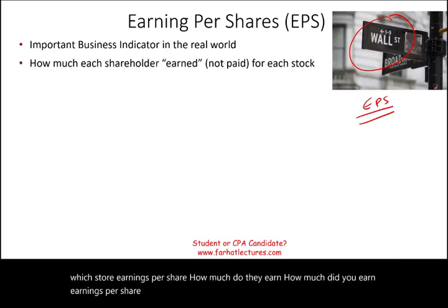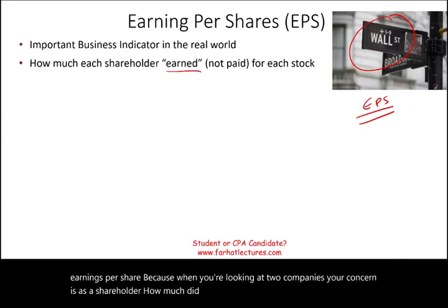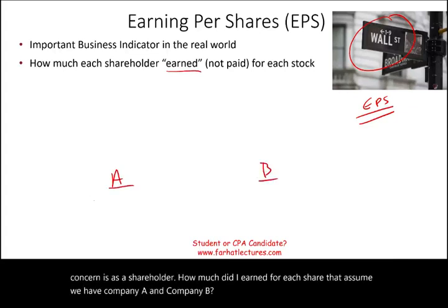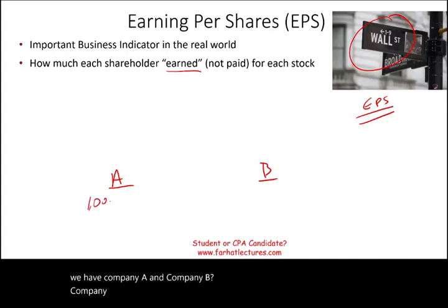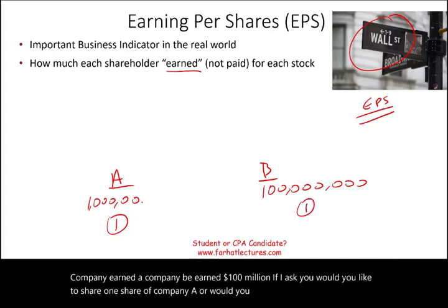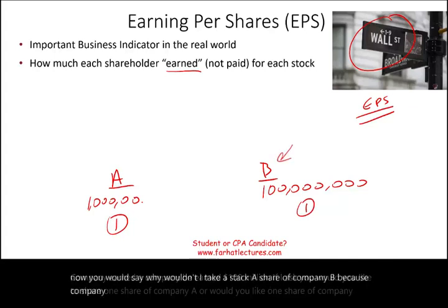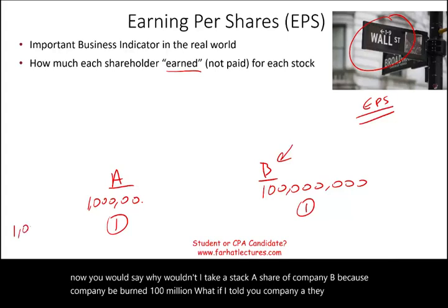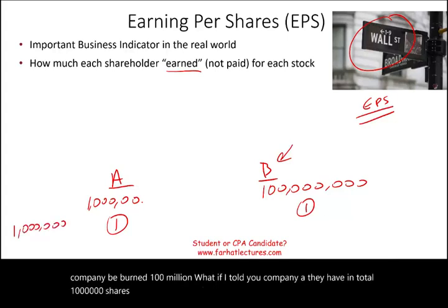Because when you're looking at two companies, your concern as a shareholder is how much did you earn for each share. Let's assume we have Company A and Company B. Company A earned a million dollars, and Company B earned $100 million. Would you like one share of Company A or one share of Company B? What if Company A has 1 million total shares and Company B has 200 million shares?